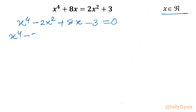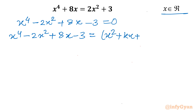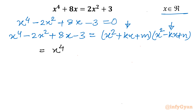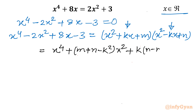Now I will write our quartic equation in the form of a product. 8x minus 3 can be written as x square plus kx plus m times x square minus kx plus n, as there is a coefficient of 0 for the x cube term. Expanding the product, we get x power 4, then m plus n minus k square times x square, then k times n minus m times x, and constant mn.